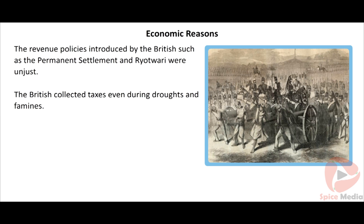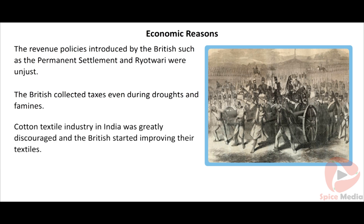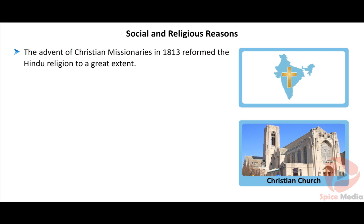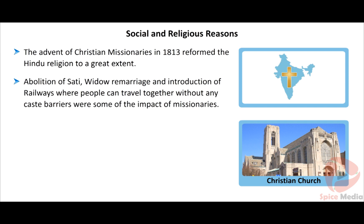Economic reasons: One of the main reasons for the revolt in 1857 was the economic exploitation by the British. Revenue policies such as Permanent Settlement and Ryotwari brought large-scale discontent, as taxes were collected even during famines and droughts, whereas native Rajas had previously waived taxes during such periods. With the Industrial Revolution, the British established cotton textile industries in their country and discouraged the cotton textile industry in India, making India a market for their goods.